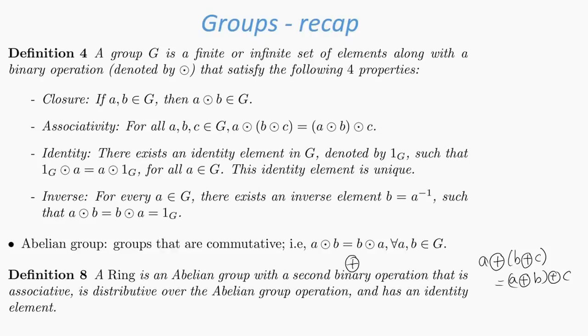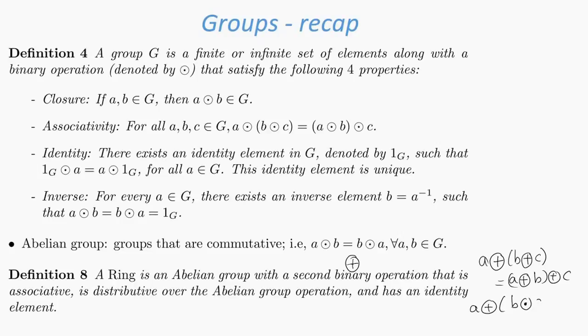And distributive over the Abelian group operation simply means that a ⊙ (b ⊕ c) = (a ⊙ b) ⊕ (a ⊙ c).